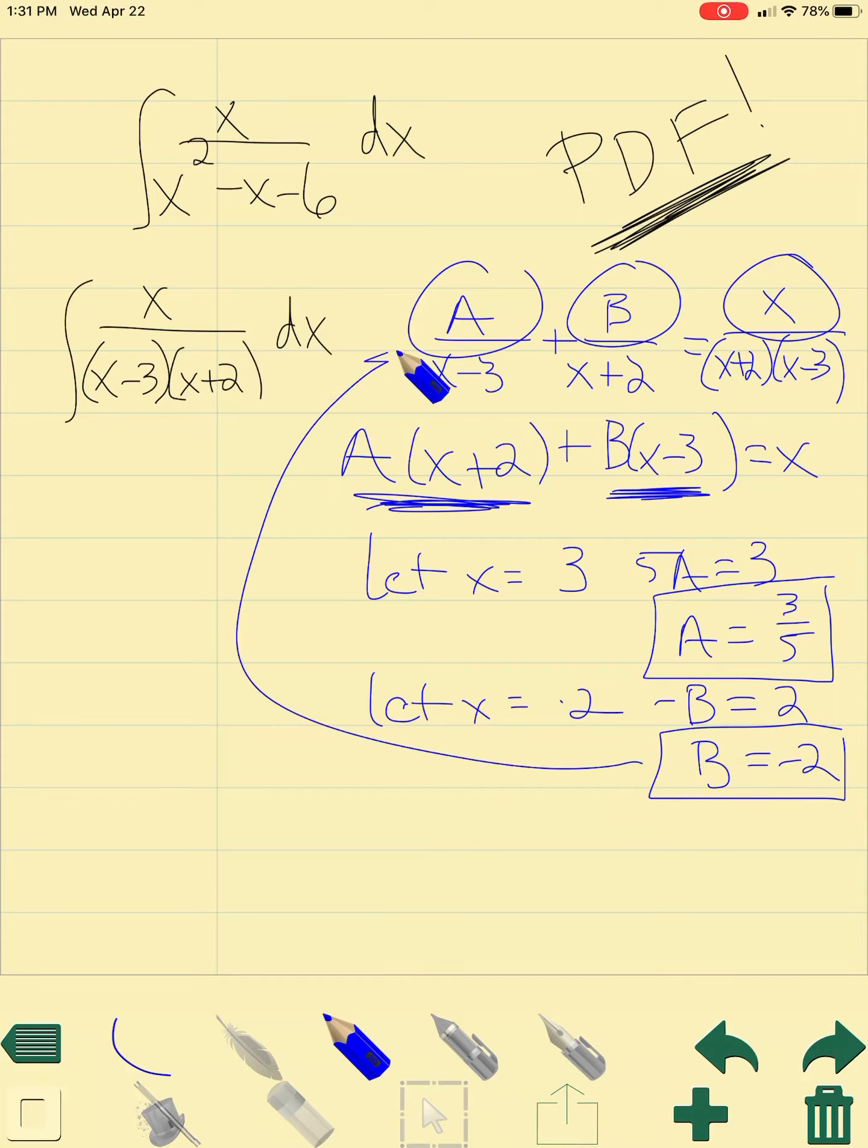So I can take these and plug them back up into here, so you're left with the integral of 3 fifths over x minus 3 plus b, which is negative 2, over x plus 2 dx. Now we can actually go through and we know how to integrate this using natural logs. This is going to be 3 fifths times the natural log of absolute value x minus 3. We went through and talked about that one of the last few days. Minus 2 times the natural log of x plus 2.